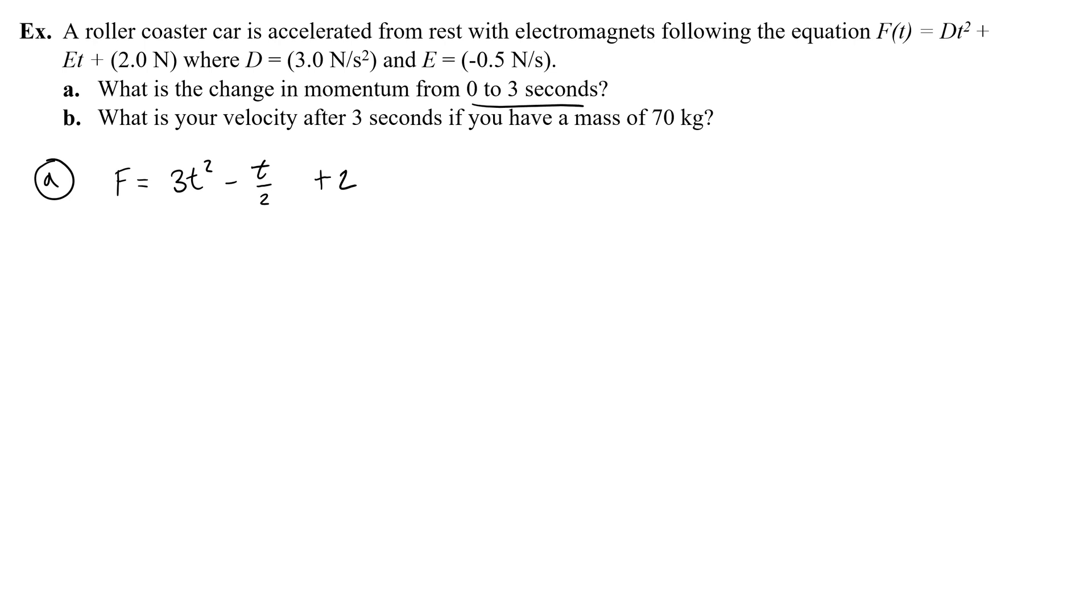You can say that you're finding J if you want, or you can say that you're finding delta p. I'm going to write delta p, and then I integrate the force equation. So 3t squared minus t over 2 plus 2 with respect to t, and I'm going to do that from 0 to 3 seconds. So this is going to give me t cubed minus t squared over 4 plus 2t, and of course I have to evaluate from 0 to 3. So to evaluate this, I plug in 3 for t, get a number, then I plug in 0 for t, get a number, and find the difference.